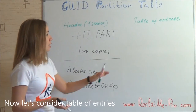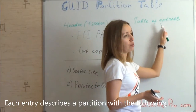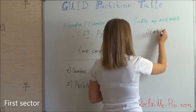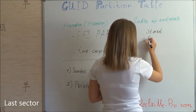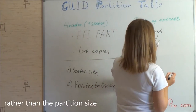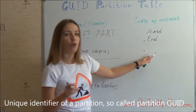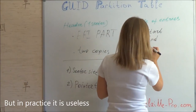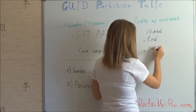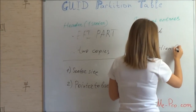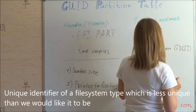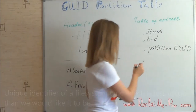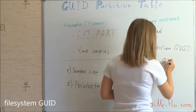Now let's consider the table of entries. Each entry describes a partition with the following fields: first sector, last sector rather than the partition size, a unique identifier of the partition — the so-called partition GUID, though in practice it is useless — and a unique identifier of the file system type, which is less unique than we would like it to be: the file system GUID.